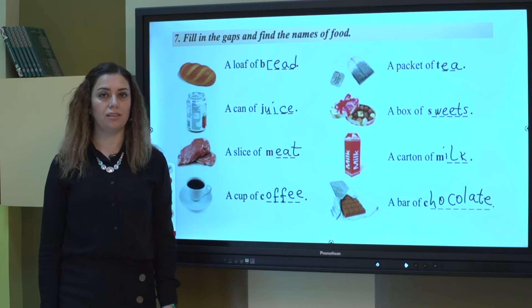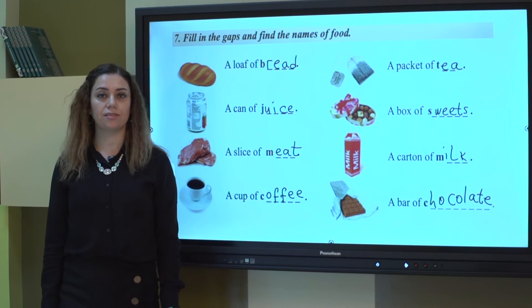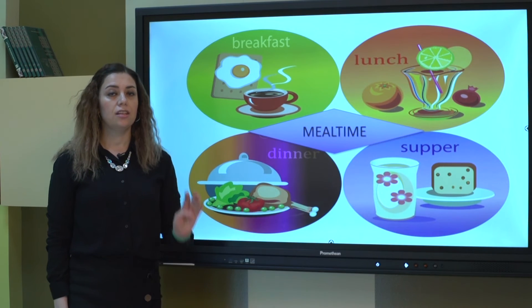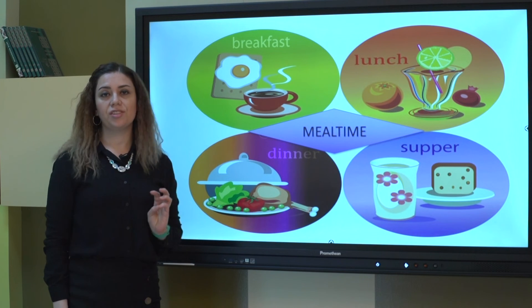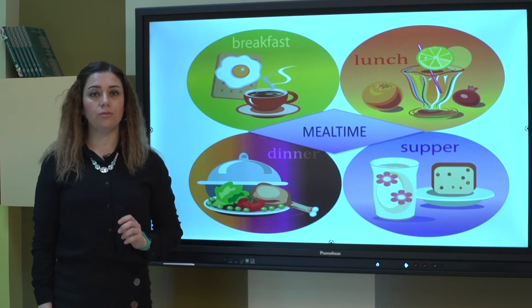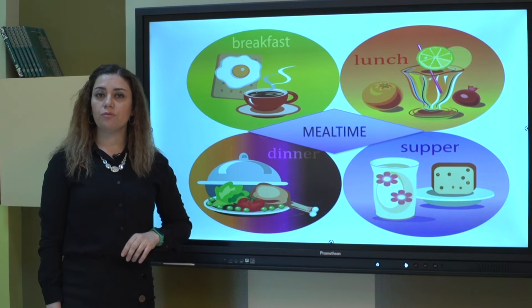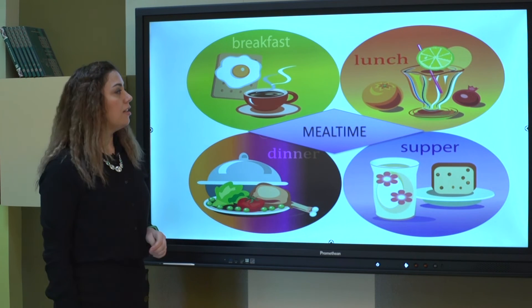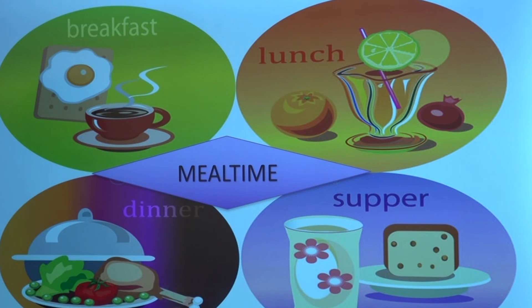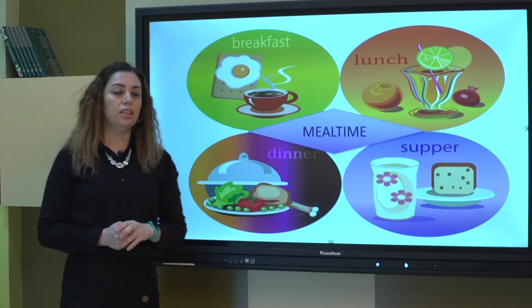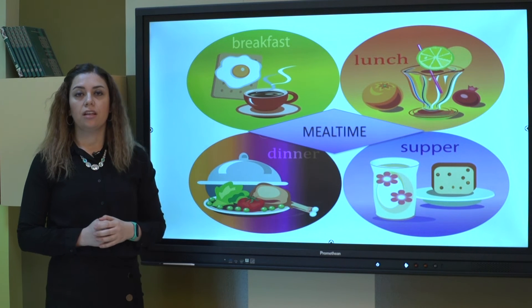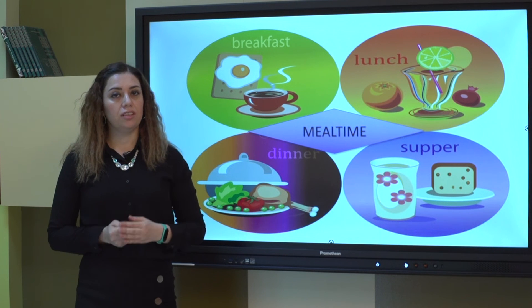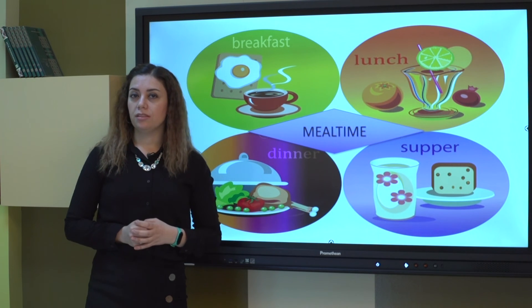Remember to use these expressions in your daily language — they are very common in English. In this part of our lesson, we are going to learn about mealtime. We eat three main meals a day and one extra. In the morning, we usually start our day with breakfast — we can eat some eggs, cheese, and butter, and drink a cup of tea. In the afternoon, we take lunch. In the evening, we take dinner. And sometimes people have supper too, which is usually at night, after the evening. These are the main mealtimes to learn.